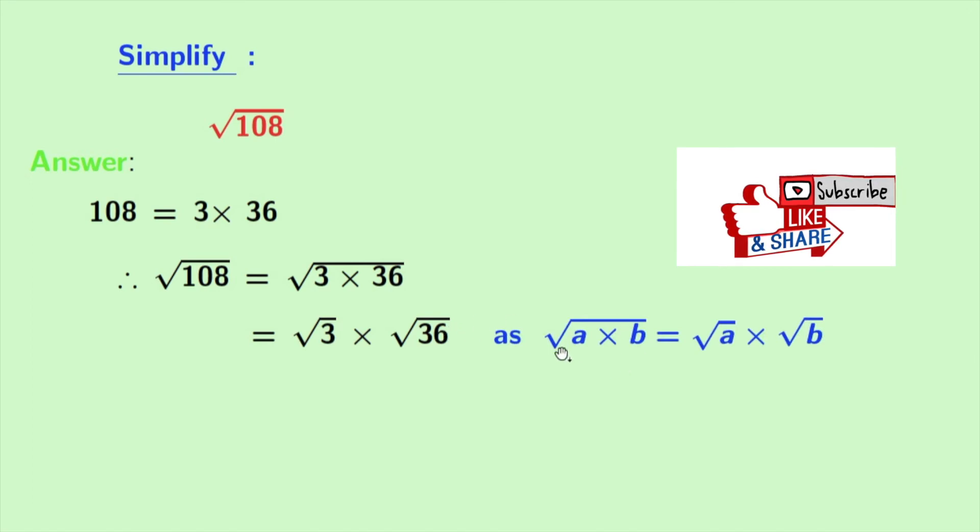Here we have used this formula: square root of a times b is equal to square root of a times square root of b.